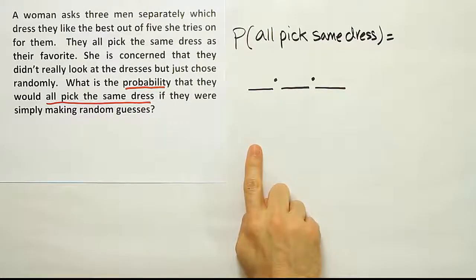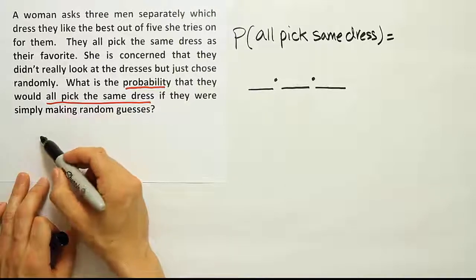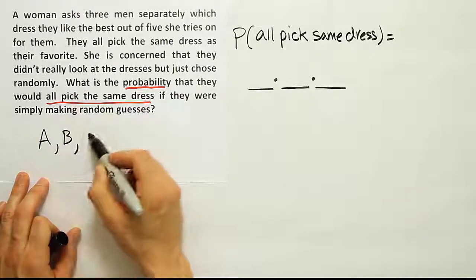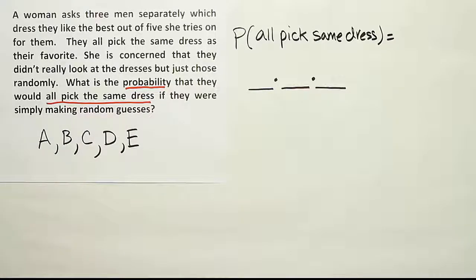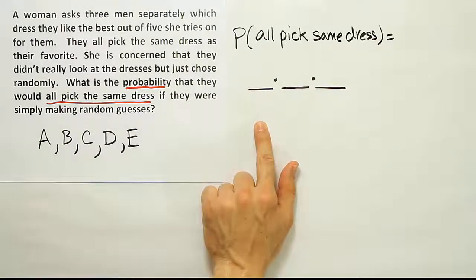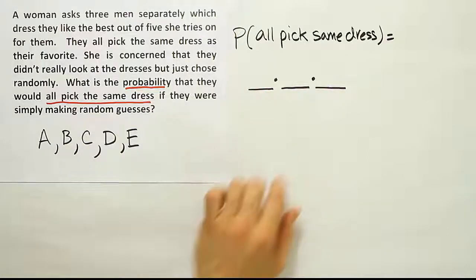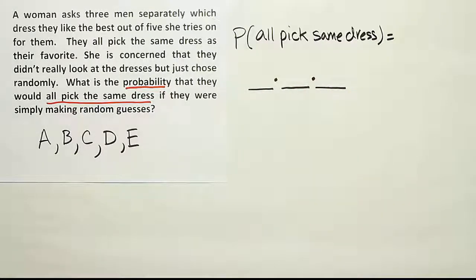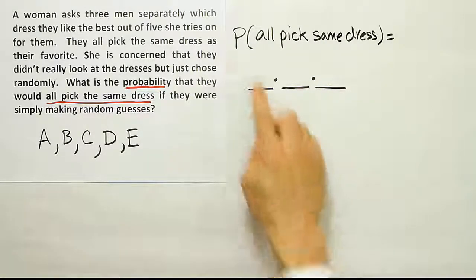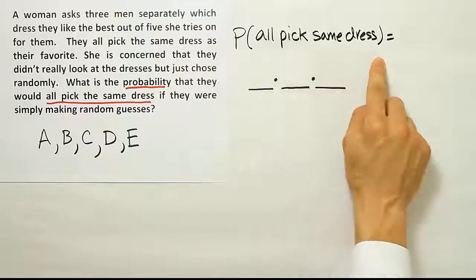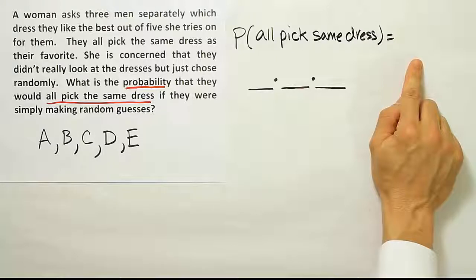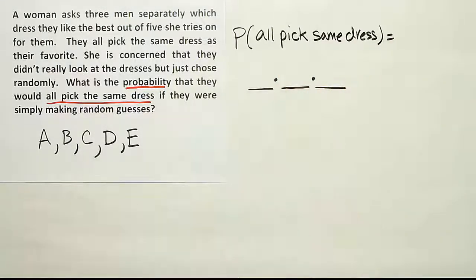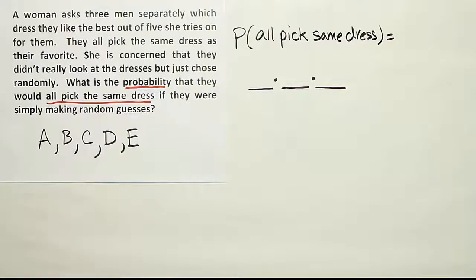The question is how many ways can they all pick the same dress? For example, they could all pick dress A. Let's assume there are five dresses — call them A, B, C, D, and E. They can all pick dress A, and the probability of that is one fifth for the first guy, since there's one dress A out of five total dresses. The chance they all pick dress B is also one fifth. So the probability they all pick the same dress could happen by everyone picking A, or everyone picking B, or everyone picking C — and those 'or' words mean we should add the probabilities together.